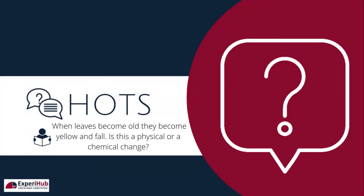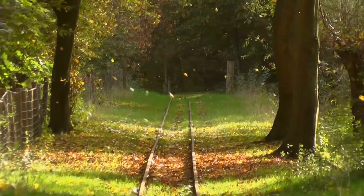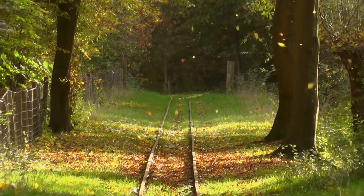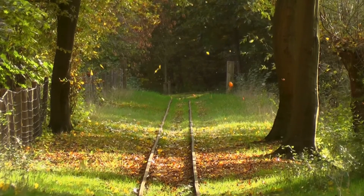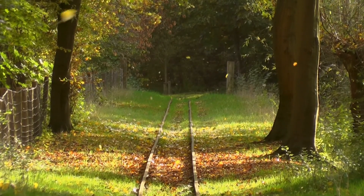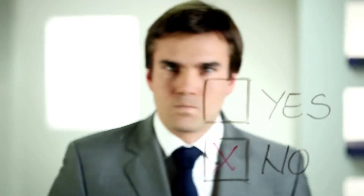Now our question is: when leaves become old, they become yellow and fall. Is this a physical or a chemical change? In autumn, when we see dry and yellow leaves falling all around us, we feel that it is happening only because of the changing season, and that this is just a physical change. However, this is not the case.